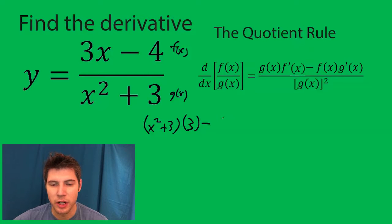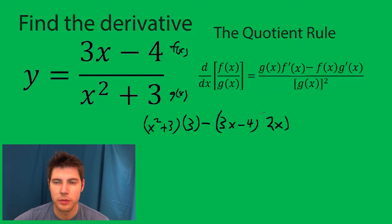f of x we bring the top over. And then g prime of x we take the derivative of the bottom which is just 2x because the 3 is a constant. And then we divide by g of x squared. Don't even bother taking the derivative. It's just g of x squared.